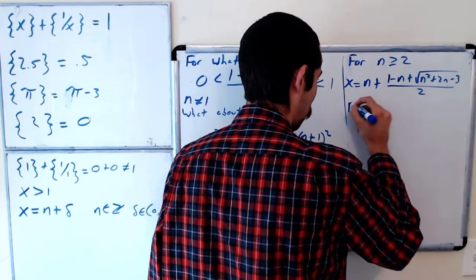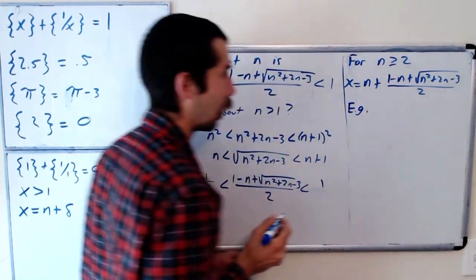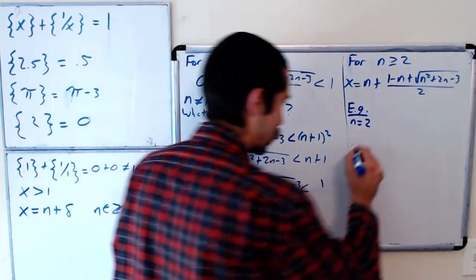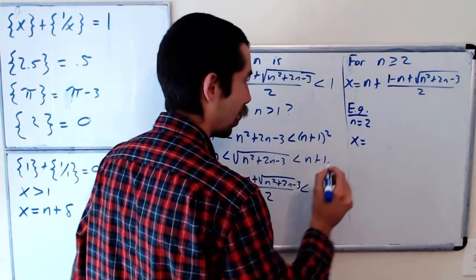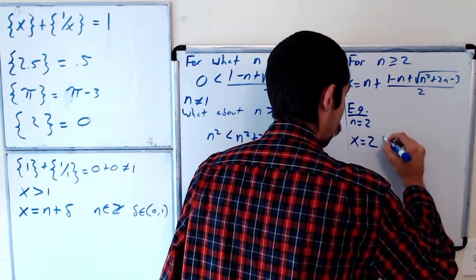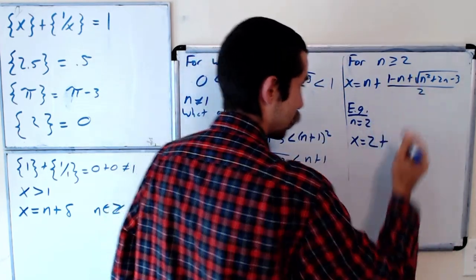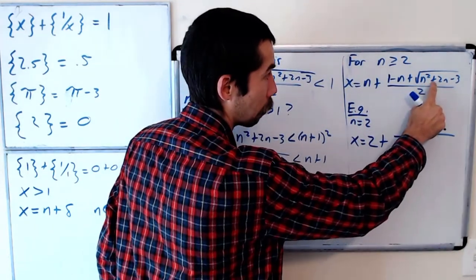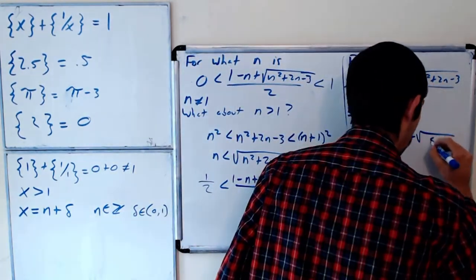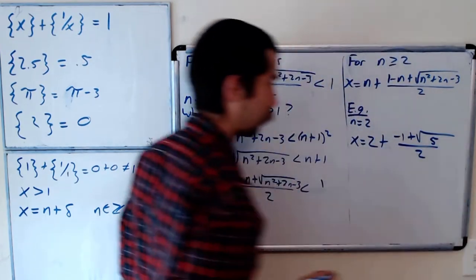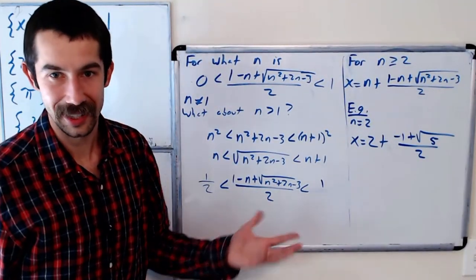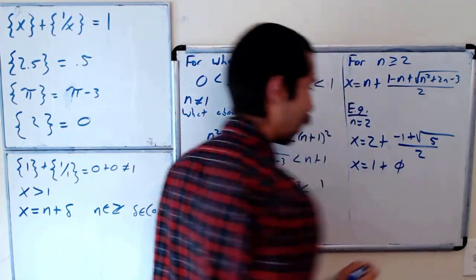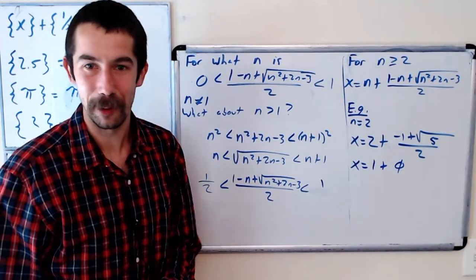So for example if you want to see like what one of the numbers looks like. If we used n equals 2 that would give us x equals 2 plus 1 minus 2. So negative 1 plus root of 5 over 2. Okay does this look familiar? It could be written as x equals 1 plus the golden ratio. There it is again it appears all the time.